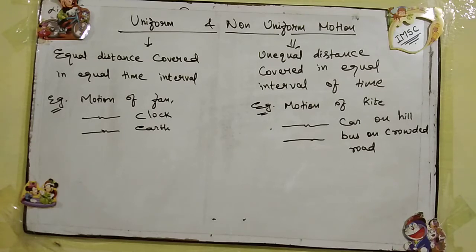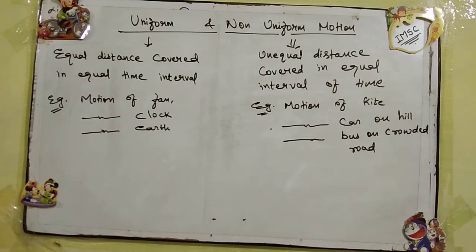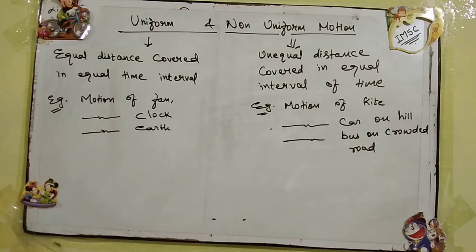What is non-uniform motion? It is when an object covers unequal distances in equal intervals of time — the distance is not fixed, sometimes more, sometimes less. For example, the motion of a kite — if the wind speed is more it covers more distance, if less then less. Similarly, the motion of a car on a hill where speed must increase or decrease, or a bus on a crowded road where speed keeps changing. That type of motion is known as non-uniform motion.